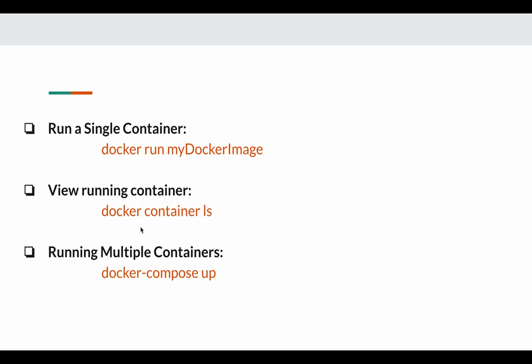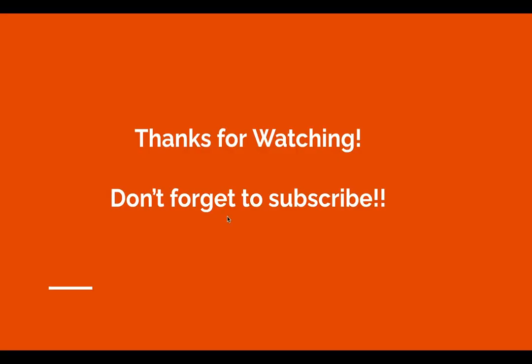If you want to view all containers running in your system, you can do so by running docker compose ls. This will show you the container ID, image status, port, and other options of your Docker containers. That's it from this video. Thanks for watching.